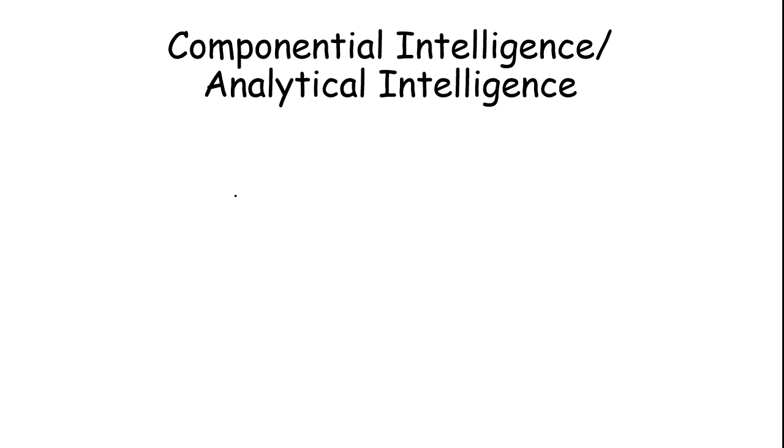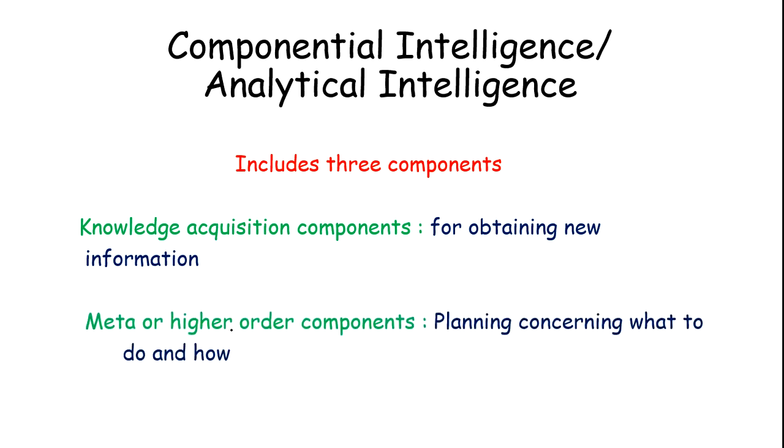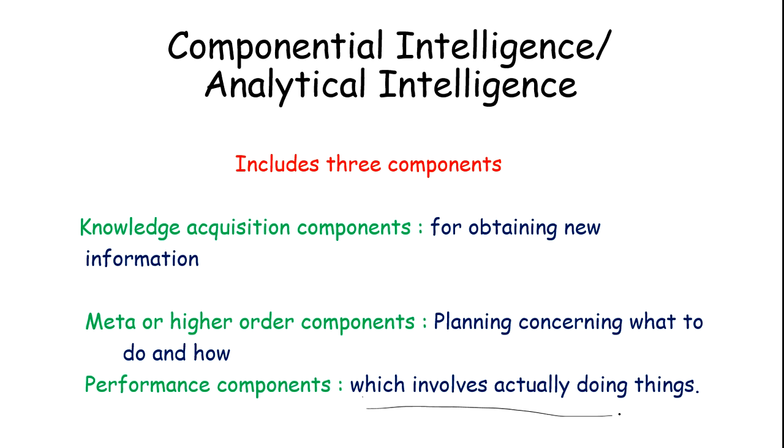First, componential and analytical intelligence. It includes three components: knowledge acquisition component for obtaining new information. Meta or higher order component, planning concerning what to do. After getting the information they plan what to do. And performance component, they start working on the things which involve actually doing things.